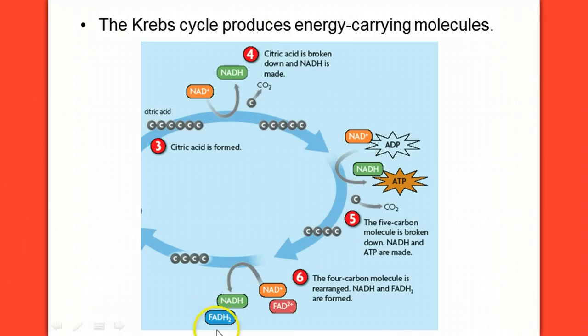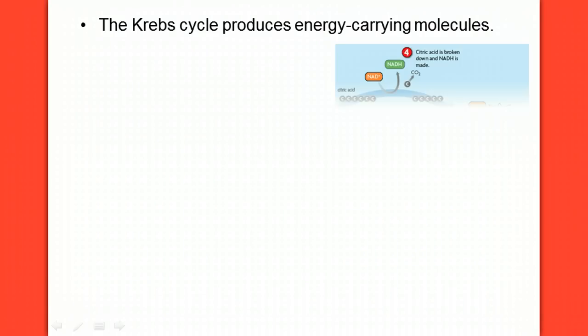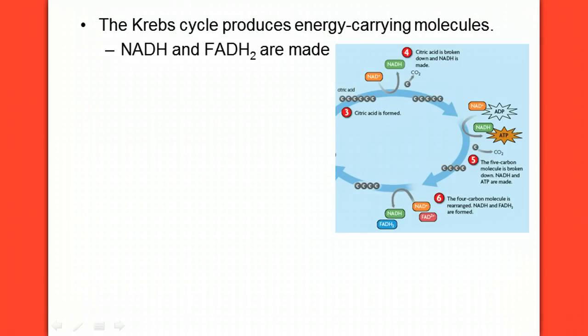But we also are making another new molecule we haven't heard of before called FADH2. And this molecule is also energy carrying. So let's look at this more in depth. The whole purpose of the Krebs cycle is not really to make ATP. Its purpose is really to make these energy carrying molecules of NADH and FADH2.